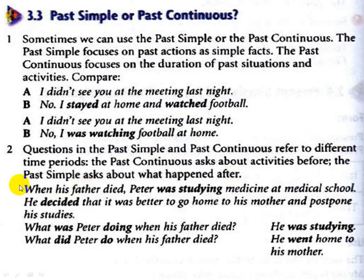For example: when his father died, Peter was studying medicine at medical school — this is the past continuous asking about activities before. He decided that it was better to go home to his mother and postpone his study — the past simple verb 'decided' asks what happened after. He went home to his mother and postponed his study.